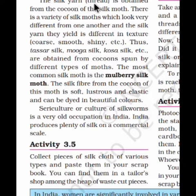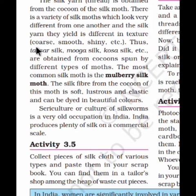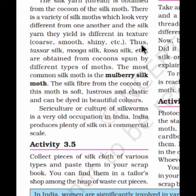The silk yarn thread is obtained from the cocoon of the silk moth. There are a variety of silk moths which look very different from one another, and the silk yarn they yield is different in texture — meaning smooth or rough, shiny or dull, and coarse. These are the texture properties you can observe in their appearance.